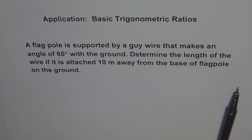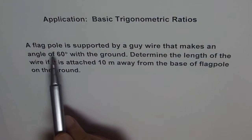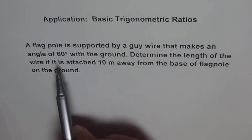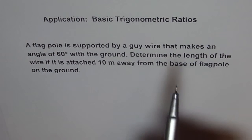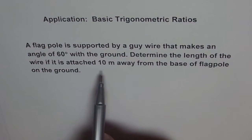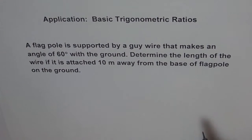Hello, here is another problem, application of basic trigonometric ratio. The problem states: a flagpole is supported by a guy wire that makes an angle of 60 degrees with the ground. Determine the length of the wire if it is attached 10 meters away from the base of the flagpole on the ground.